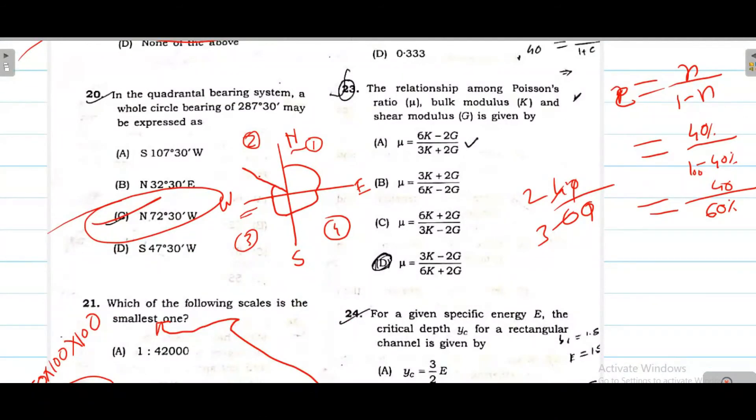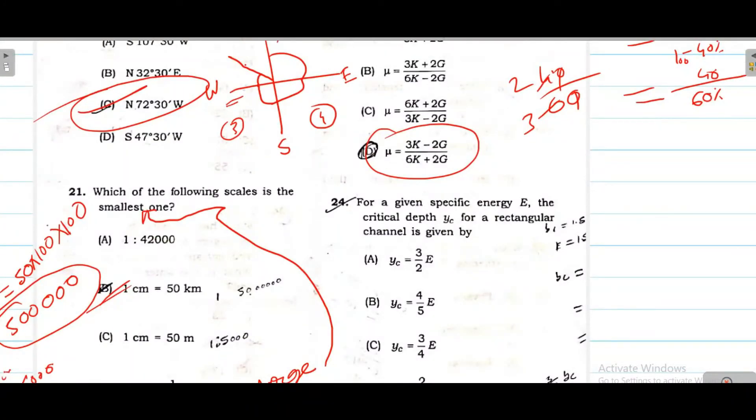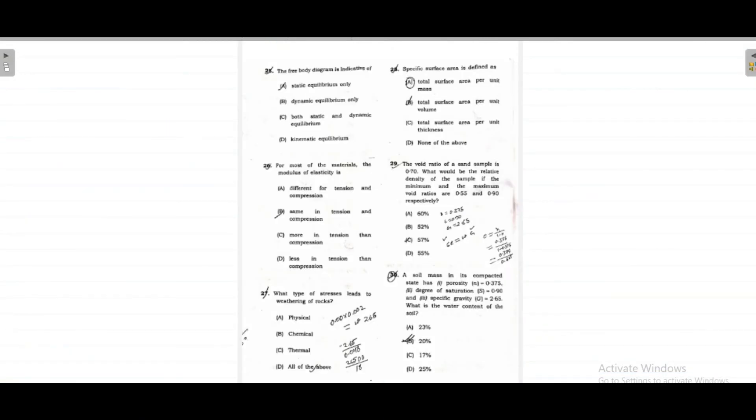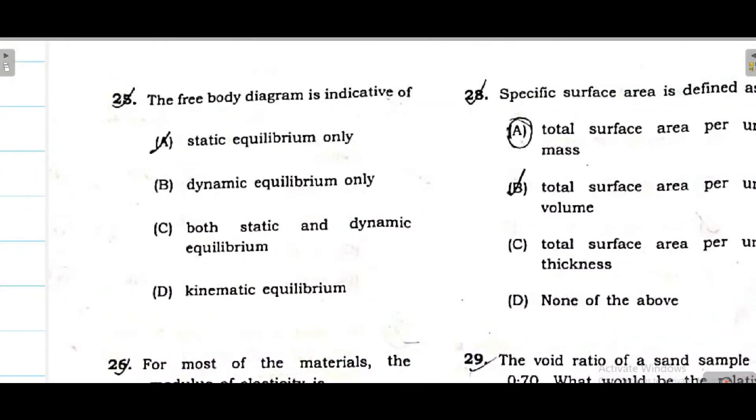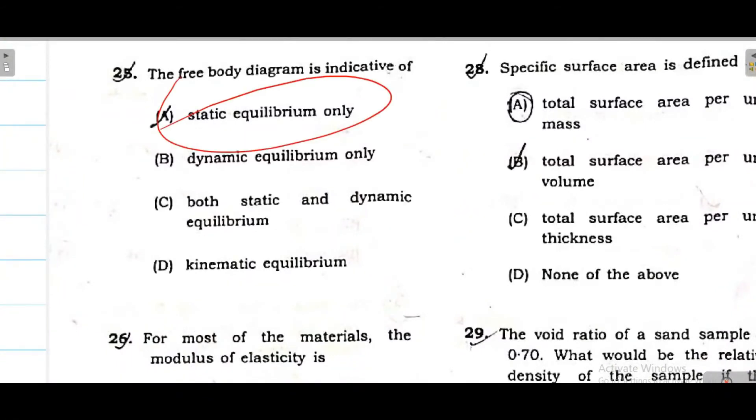Important relationship - Poisson ratio, bulk modulus and shear modulus. Here option D is correct - 3K minus 2G divided by 6K plus 2G equals mu. Next, specific energy. This is from fluid mechanics, open channel flow. Specific energy formula you have to remember - that is Yc, specific critical depth. Specific energy is 3 by 2 of Yc. So if Yc is given, 2 by 3 of Ec. So option D is correct.